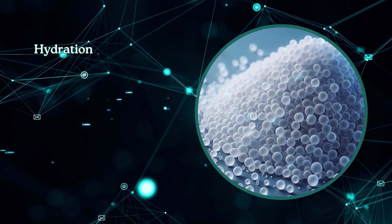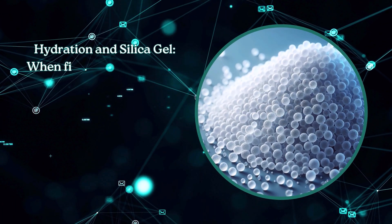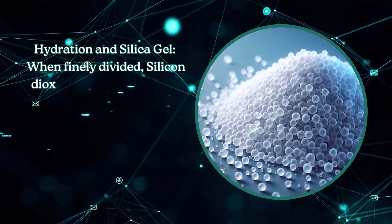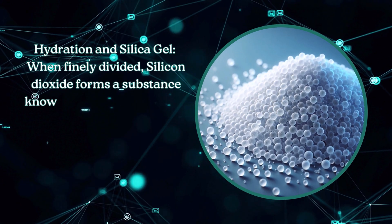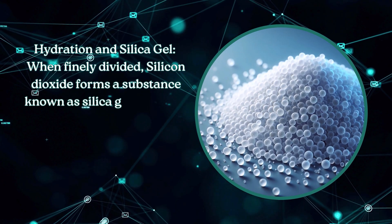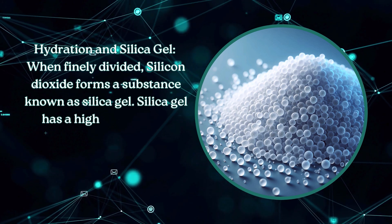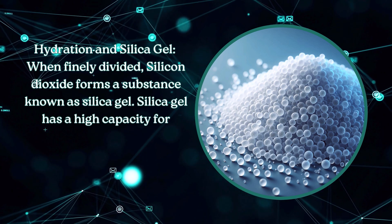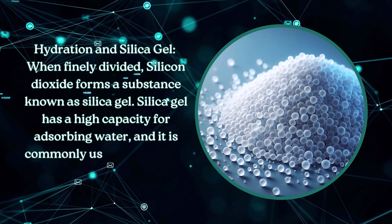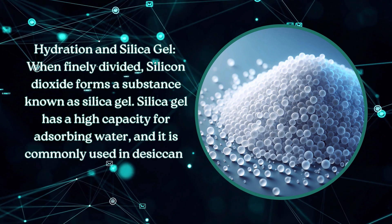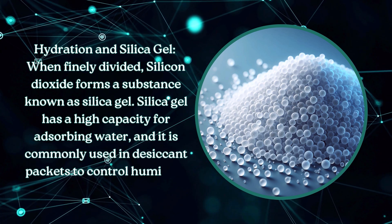When finely divided, silicon dioxide forms a substance known as silica gel. Silica gel has a high capacity for absorbing water and it is commonly used in desiccant packets to control humidity.